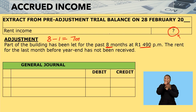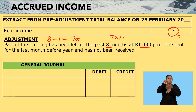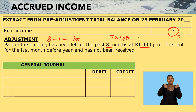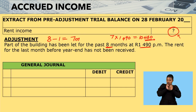Rent for seven months multiplied by $1,490 gives me $10,430. This is the rent that we have already received for the seven months.